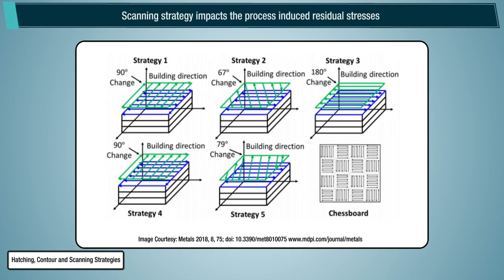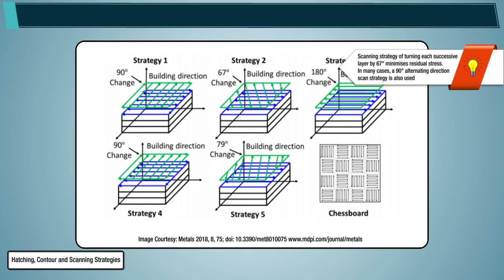Scanning strategy impacts the process-induced residual stresses and hence to be carefully chosen to reduce residual stresses. Scanning strategy of turning each successive layer by 67 degrees minimizes residual stress. In many cases, a 90 degrees alternating direction scan strategy is also used.